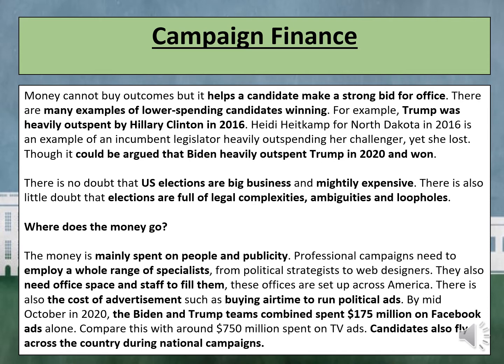There is no doubt that US elections are big business and mightily expensive. There is also little doubt that the elections are full of legal complexities, ambiguities and loopholes. So where does this money go? The money is mainly spent on people and publicity. Professional campaigns need to employ a whole range of specialists, from political strategists to web designers. They also need office space and staff to fill them, and these offices are set up across America.